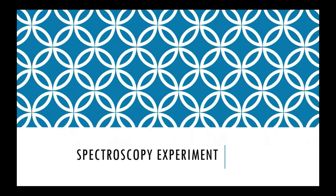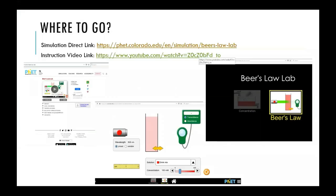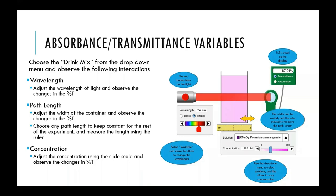This experiment uses a PhET simulation to relate absorbance with concentration, path length, and molar absorptivity, as well as seeing those different types of graphs — an absorbance spectrum and a calibration graph — and then using that calibration graph to determine concentrations, absorbance, and transmission. In the first part of the experiment, you're playing around with the PhET simulation to change the concentration, path length, and wavelength of light, and observing how that affects the percent transmittance and absorbance of the different solutions.